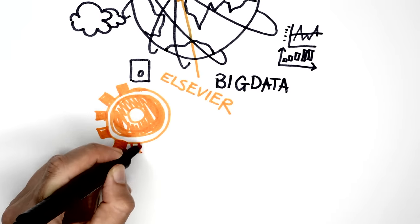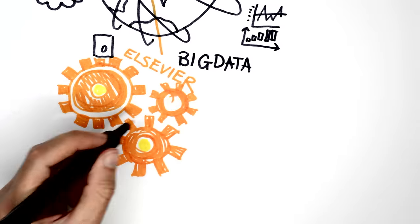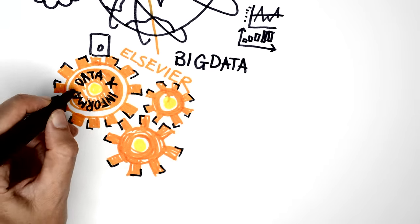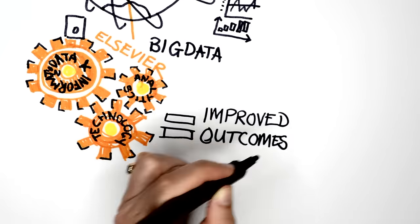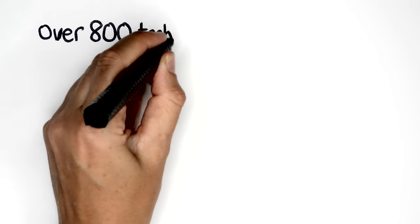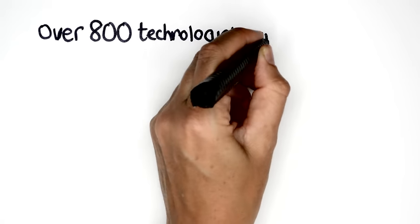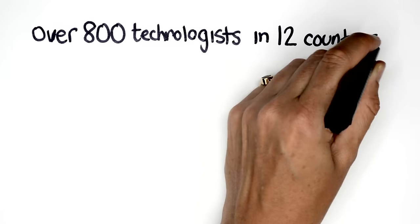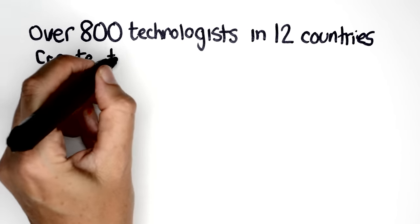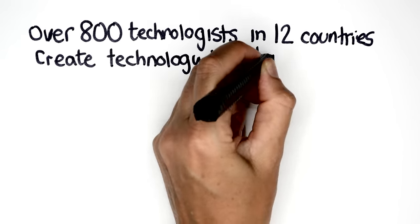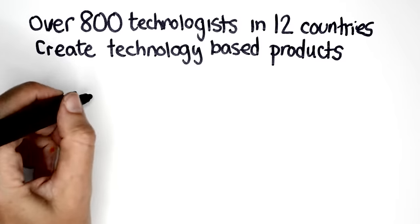Elsevier technology is central to that work, and you could be too. Over 800 technologists in 12 countries create the technology-based products that automate our business and provide a world-class technology infrastructure that can truly transform the raw materials and building blocks of ideas into a vital, organic system of knowledge.